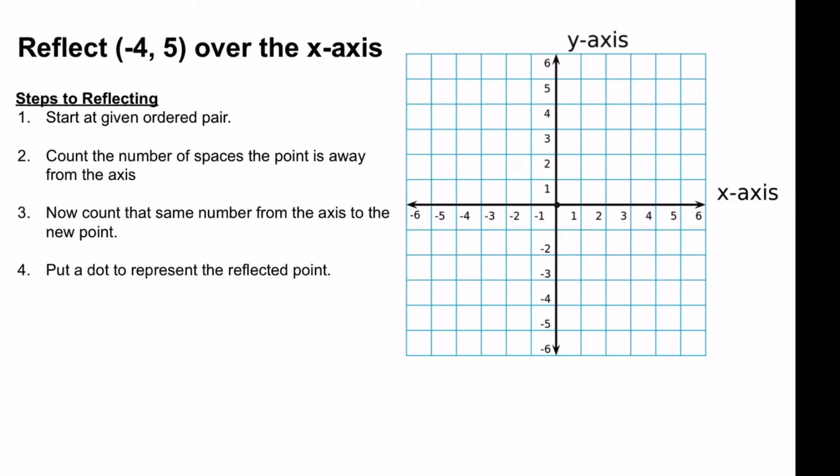So I'm going to go to the left 4 spaces, and I'm going to go up 5. And then I'm going to say 1, 2, 3, 4, 5, and I'll put a dot.